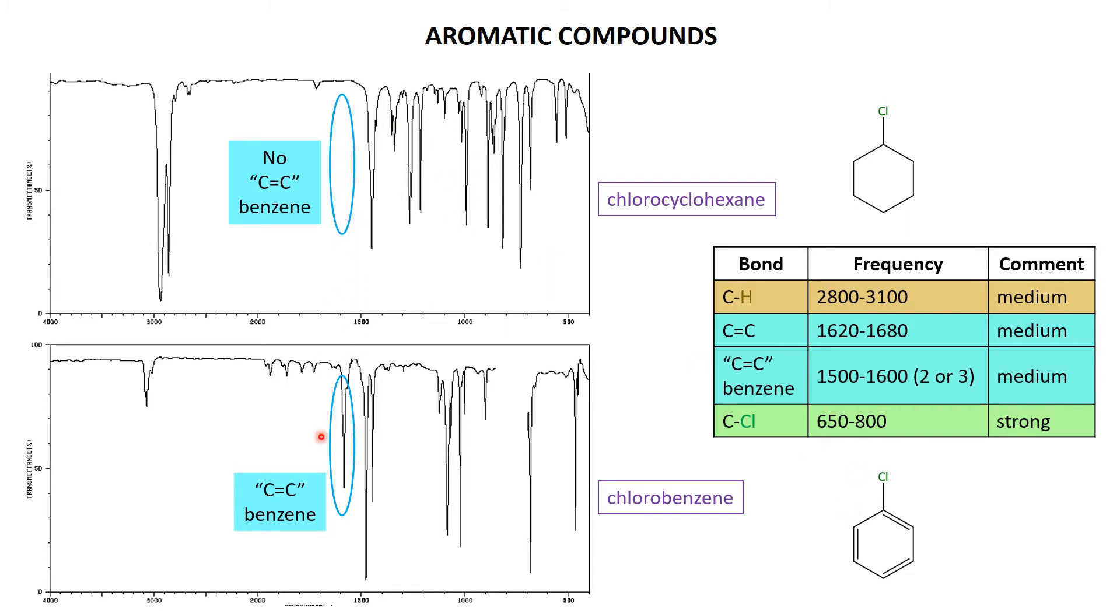...the much nicer peak here at about 1600 that is not present in the aliphatic versus the aromatic rings there. So a definite way that you can see the presence of a benzene ring with that nice little peak right around 1600. And again, you can kind of see little double bits there, it's sort of two peaks together.